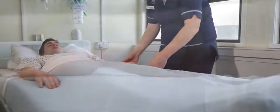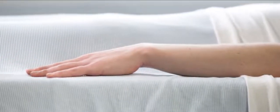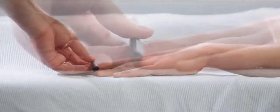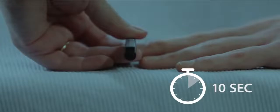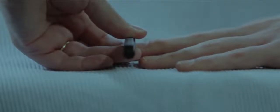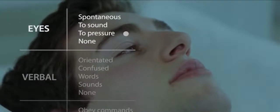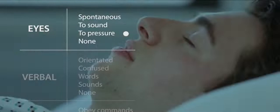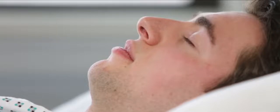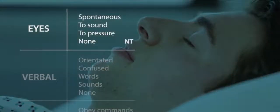If the patient does not open their eyes when you speak to them, a physical peripheral stimulus is then applied. Stimulation starts at a low level by pressing on the nail tip and is applied with increasing intensity for up to 10 seconds until the patient demonstrates a response or until maximum stimulus has been applied. If the patient opens their eyes, record 'to pressure'. If they do not open their eyes, record 'none'. If there are local factors such as swelling interfering with eye-opening, record 'eyes not testable'.